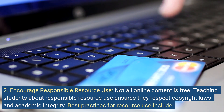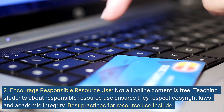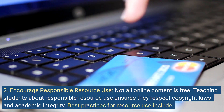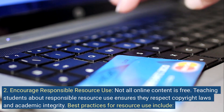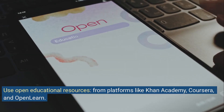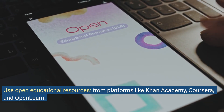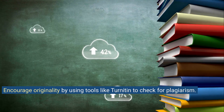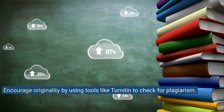Encourage responsible resource use. Not all online content is free. Teaching students about responsible resource use ensures they respect copyright laws and academic integrity. Best practices include using open educational resources from platforms like Khan Academy, Coursera, and OpenLearn; citing and crediting sources when using online materials; and encouraging originality by using tools like Turnitin to check for plagiarism.